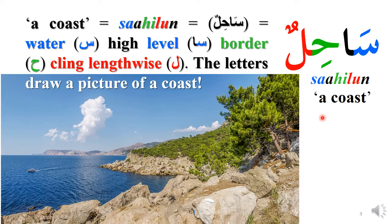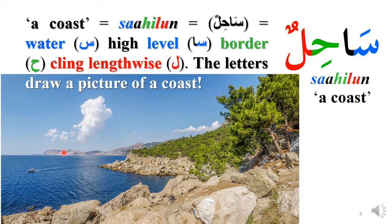In the word 'sahilun,' which means a coast, you can see the SIN, which we already know is related to water. Then you have the ALIF, which indicates a high level or large amount of water — it has to be a large body of water to be indicated as a coast. Then the HA represents the 'hadun' or 'hudud,' the border of the country, and the LAM means to cling lengthwise. So lengthwise, along this border, the large body of water is clinging. These letters are drawing a picture of a coast very clearly.